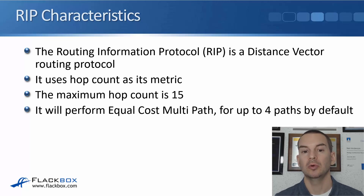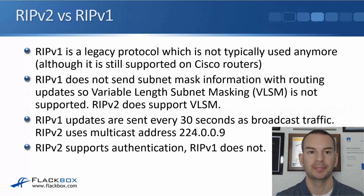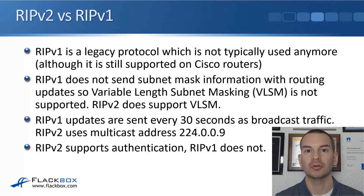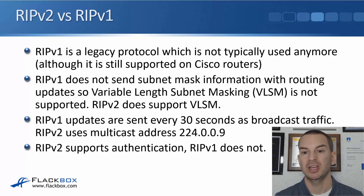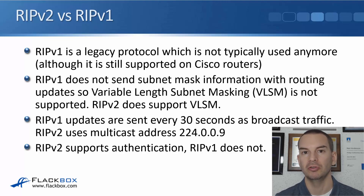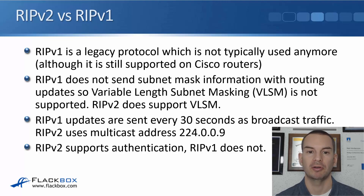RIP will perform equal cost multipath up to four equal cost paths by default. We're currently on RIP version 2. RIP version 1 is a legacy protocol which is typically not used at all anymore, and RIP version 2 isn't used very often either, although it is still supported on Cisco routers.